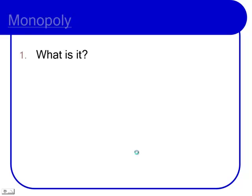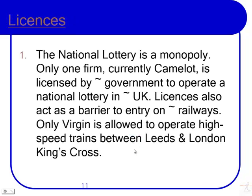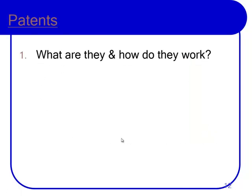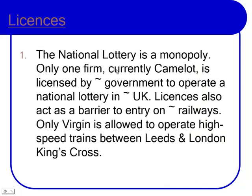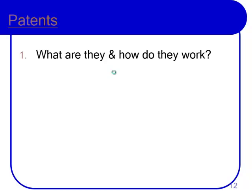There's an explanation of what a monopoly is. The National Lottery is a monopoly — only one firm, currently Camelot, is licensed by the government to operate a national lottery in the United Kingdom. Licenses also act as a barrier to entry on the railways. Only Virgin Trains is allowed to operate high speed trains between Leeds and London Kings Cross.